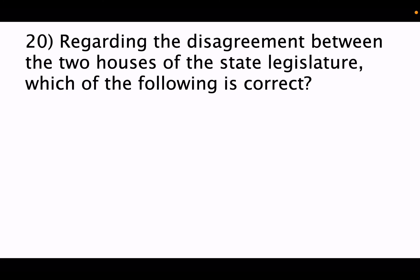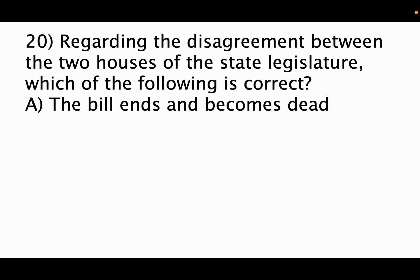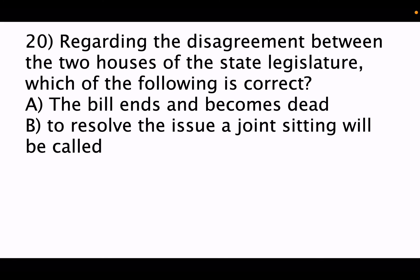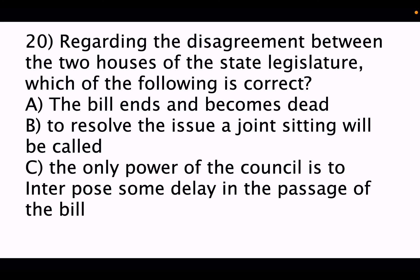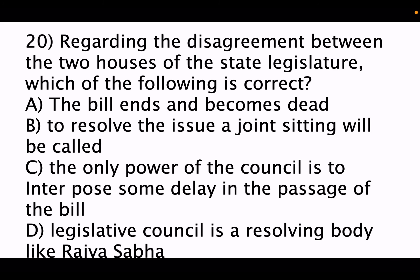Twentieth question: regarding disagreement between two houses of the state legislature, which of the following is correct? Option A: the bill lapses and becomes dead. Option B: a joint sitting will be called to resolve the issue. Option C: the only power of the legislative council is to interpose some delay in the passage of a bill — the legislative council is not a resolving body like Rajya Sabha. The correct answer is option C.